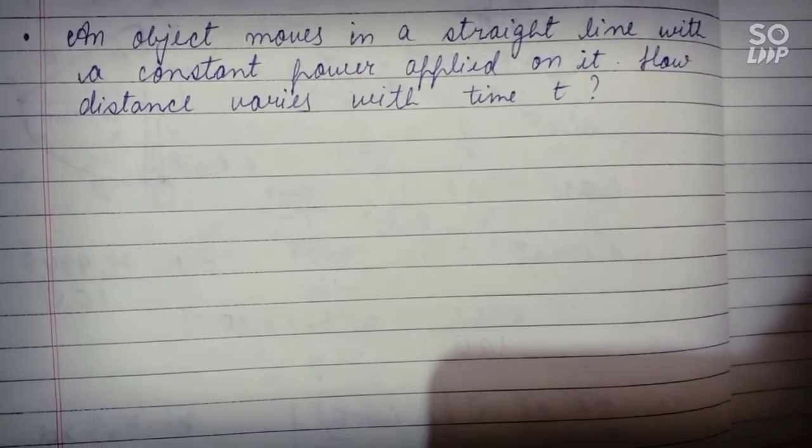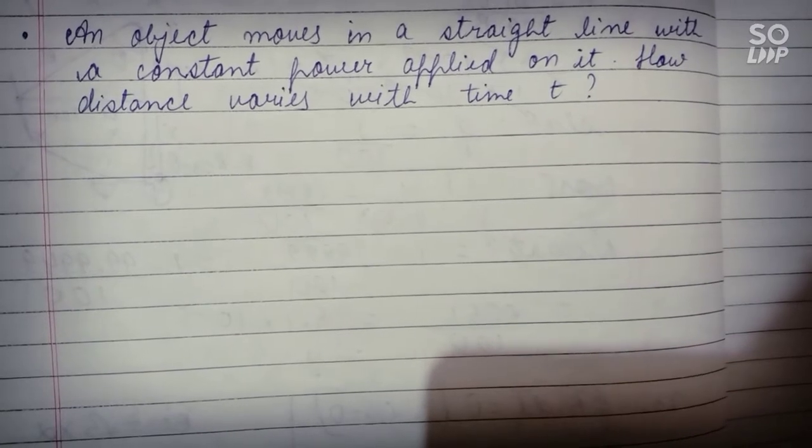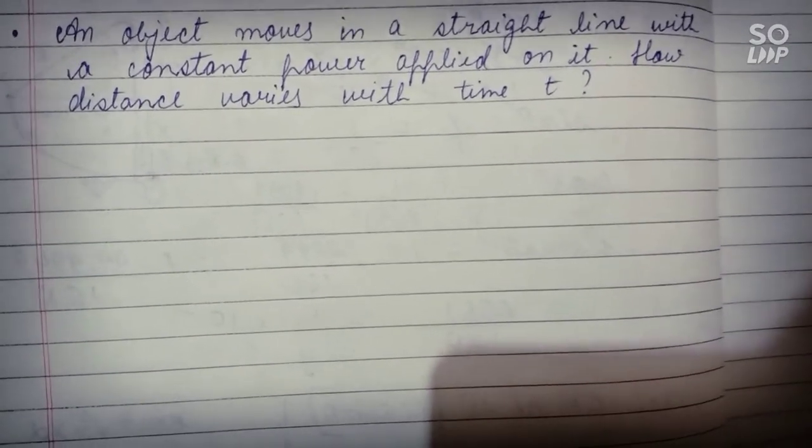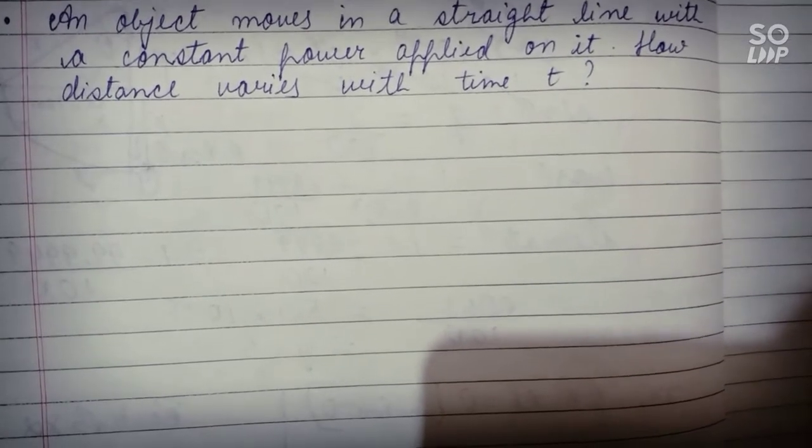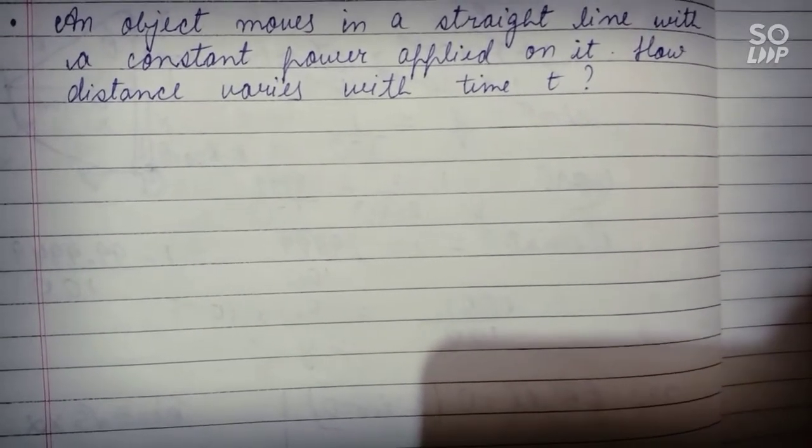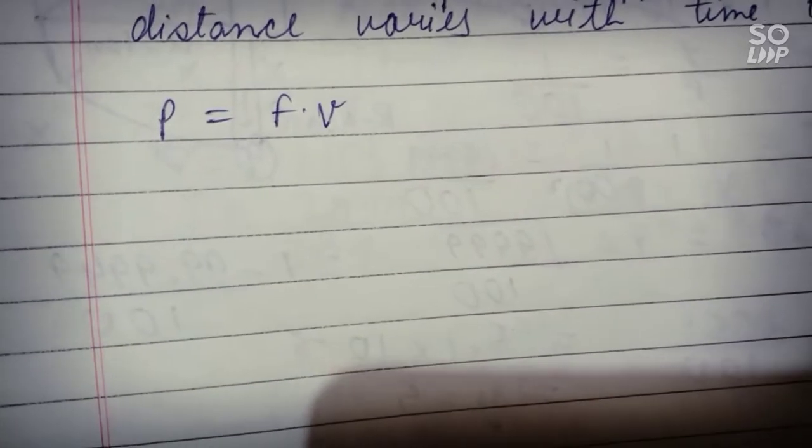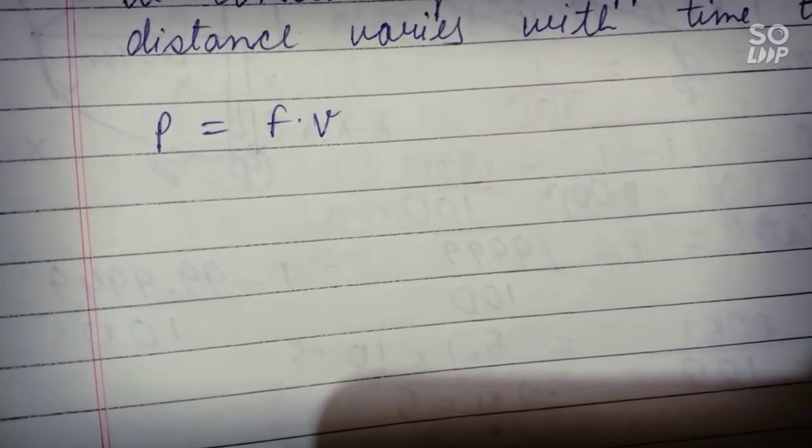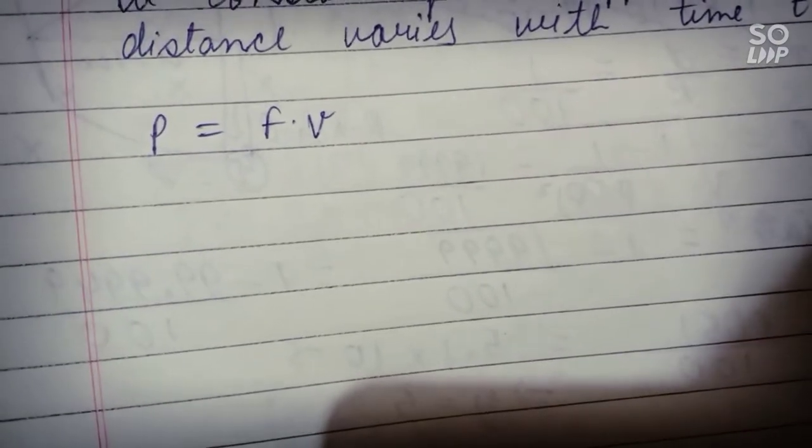How does distance vary with time? Now we know that power is equal to force into velocity, P equals F into V. Now we are given that power is constant.